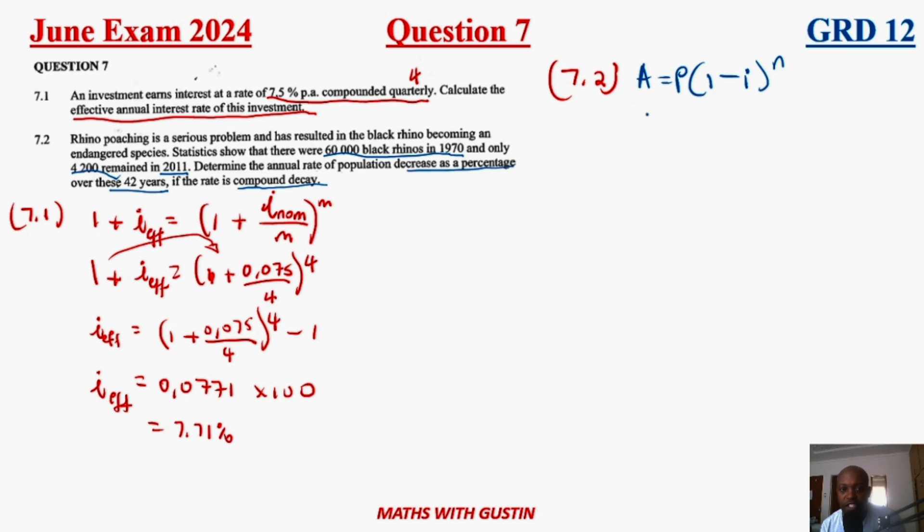Our initial amount is 6,000 and it has decayed to 4,200. If you speak to the question, you shouldn't make any mistakes. What are you looking for? You're looking for the rate, which is i, and then n will have to be 42 years. So it's going to be 42 years. Now we need to solve for i.